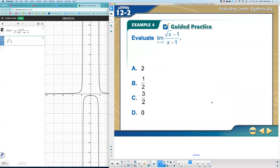So now I'll let you try this one. What you're going to need to do here is multiply by the conjugate, which would be the quantity square root of x plus one.